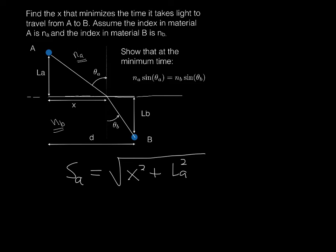And so the time in medium A is going to be the distance in medium A divided by the speed in medium A. But of course, the speed in medium A is going to be the speed of light in a vacuum divided by n_a. So that's going to be s_a divided by c over n_a. That's v_a right there. But wait a minute.